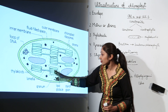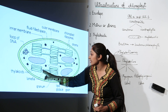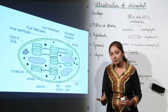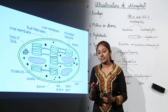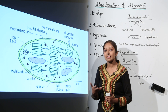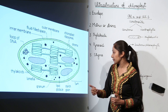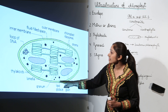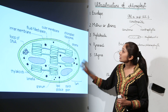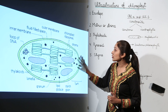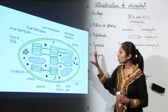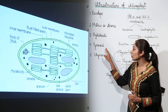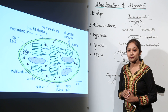This discoid thylakoid is known as a granum, and the grana are joined to one another by structures called lamellae — they can also be called stroma lamellae, intergranular lamellae, or fret lamellae (FRET). We can also see lipid globules present here. This is how we view the chloroplast. Next, we will move on to pyrenoid and stigma.